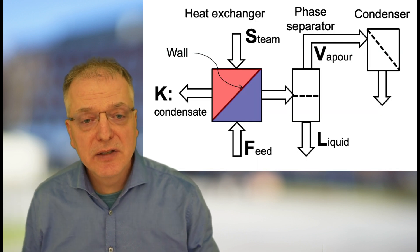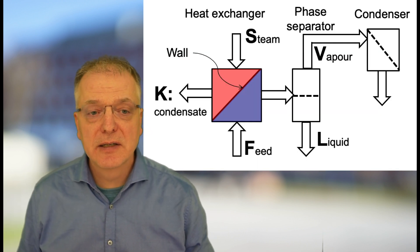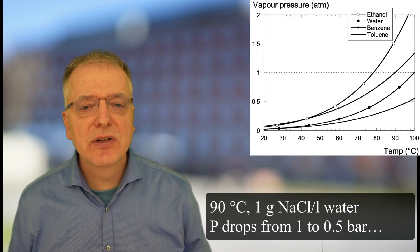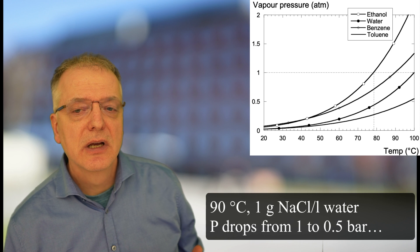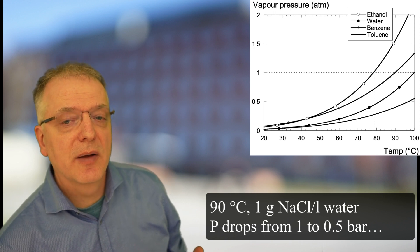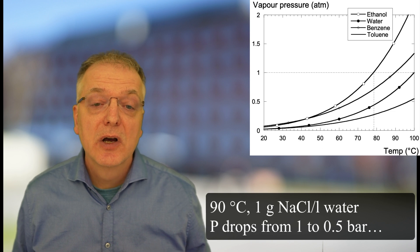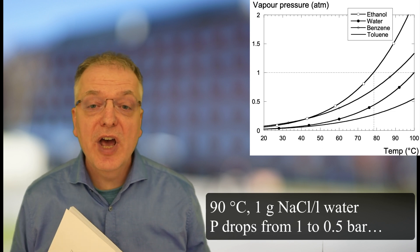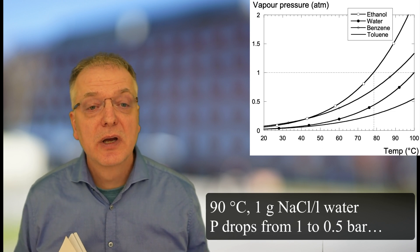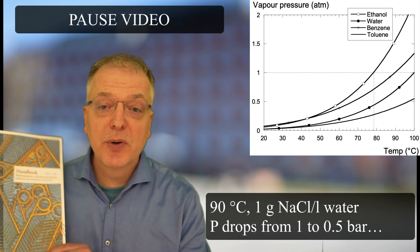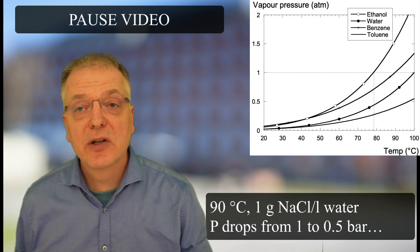I mentioned that the condenser determines the pressure on the feed side. Why is the pressure important? Well, consider a 90 degree water solution containing 1 gram of sodium chloride per liter at 1 bar. What happens if the pressure drops to 0.5 bars? Pause here, pick up your nearest steam table and try to answer that question.